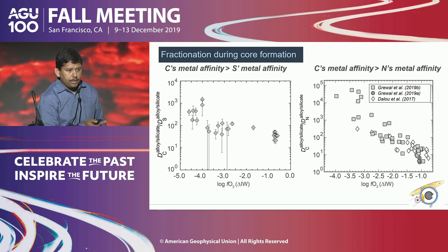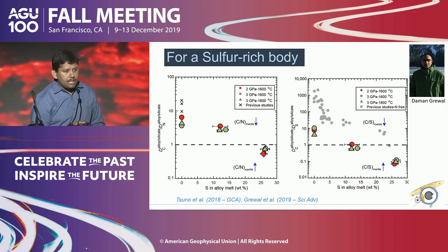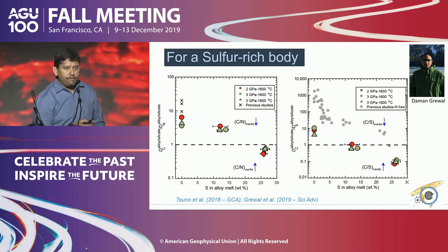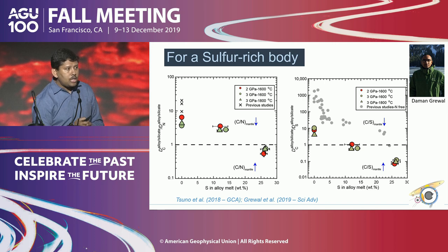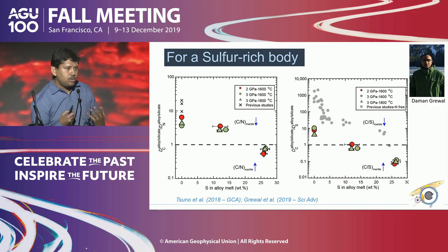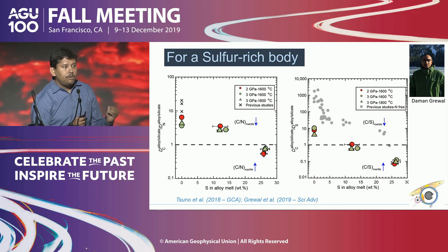Carbon's metal affinity compared with sulfur's and nitrogen's shows that all these volatile elements are siderophile. But more interestingly, carbon is more siderophile than sulfur, and carbon is more siderophile than nitrogen, under all shallow upper-mantle conditions where magma ocean differentiation took place. So equilibrium core formation cannot explain the subchondritic or superchondritic carbon-to-nitrogen ratio and chondritic carbon-to-sulfur ratio. One of my grad students showed that if you look at equilibrium core fractionation for a sulfur-rich planetary body, you can flip the relative carbon-sulfur and carbon-nitrogen fractionation behavior.